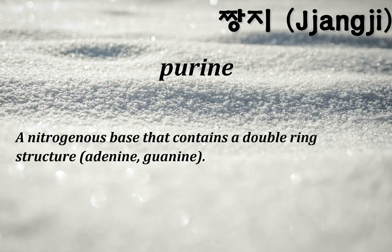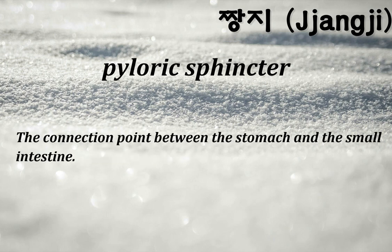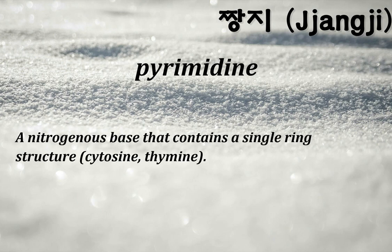Purine: a nitrogenous base that contains a double ring structure — adenine and guanine. Pyloric sphincter: the connection point between the stomach and the small intestine. Pyrimidine: a nitrogenous base that contains a single ring structure — cytosine and thymine.